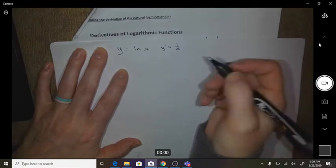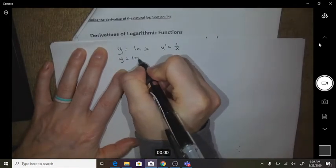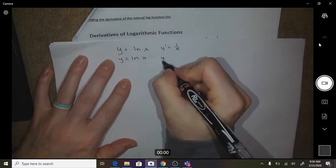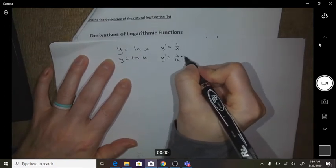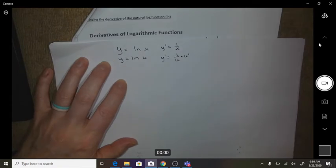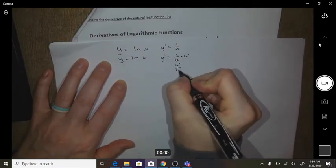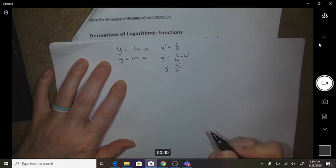So if you want to do a chain rule on that, if x is something more, then your derivative will be 1 over u, and then you'll have to times it by the derivative of u. We could also write this as a single fraction and just simplify it.